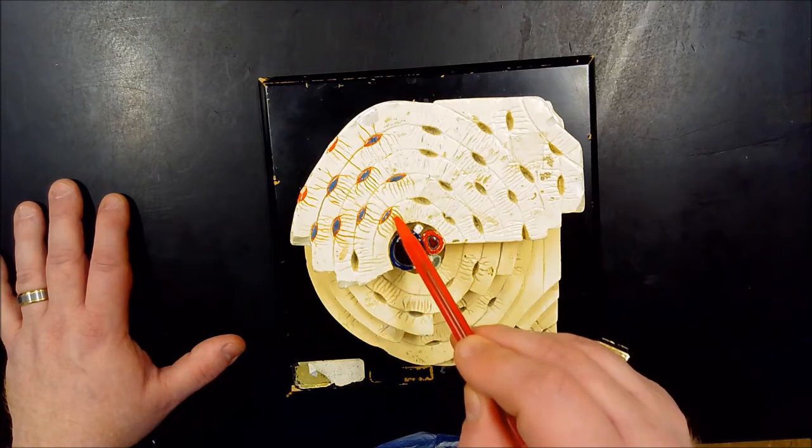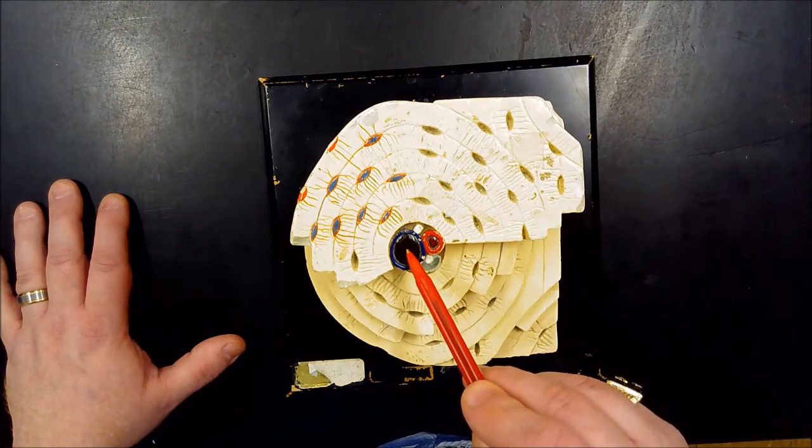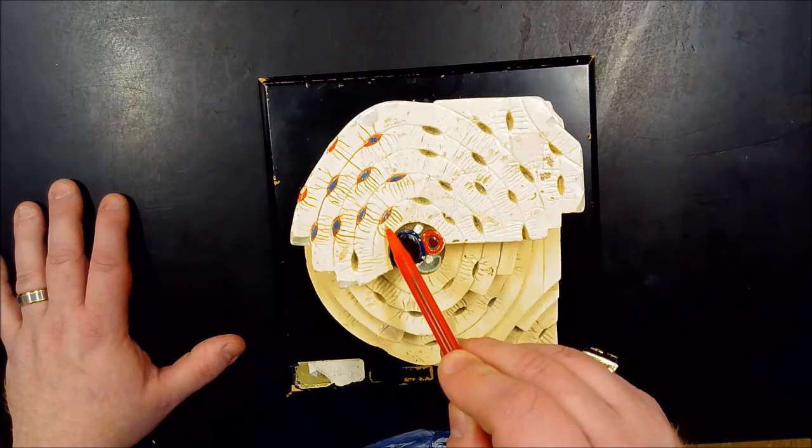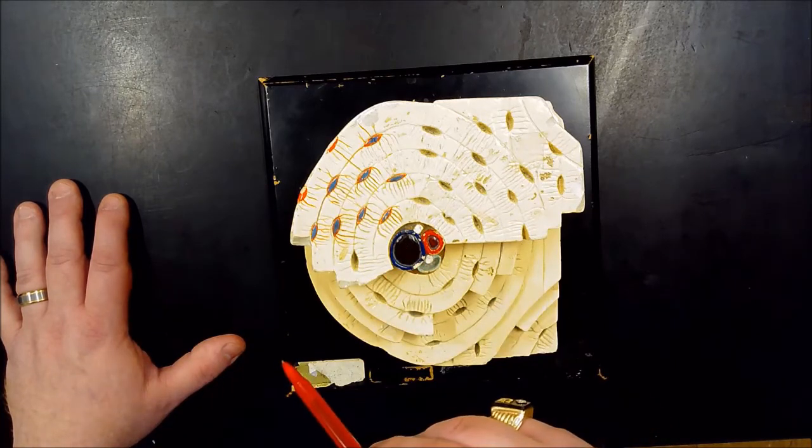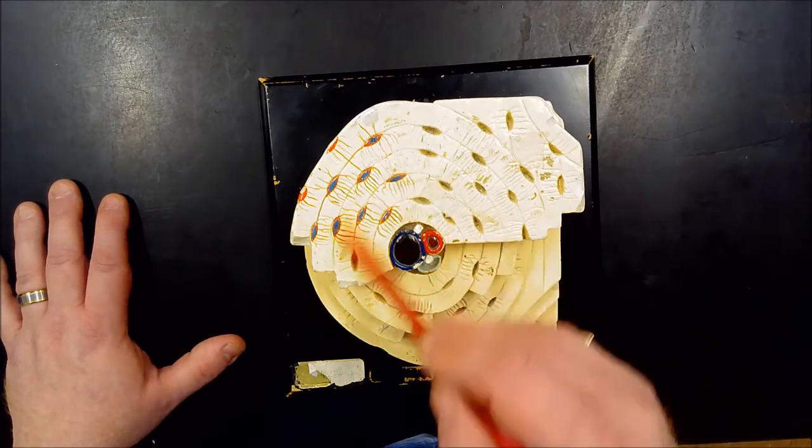You could also appreciate the canaliculi that are going over here, so the nutrients go from here and can pass through the canaliculi to each one of the osteocytes.